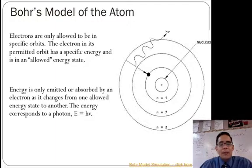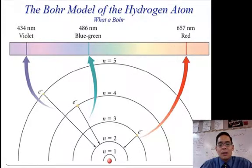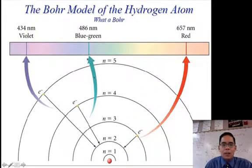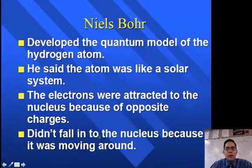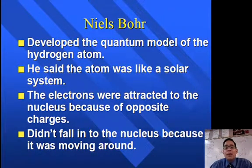So if you have questions, there's that picture. You can see all of these are the transitions. Turns out for hydrogen, the 3 to 2 creates that red line. The 4 to 2 creates the blue-green line. And the 5 to 2 creates the violet. There's a 6 to 2 as well that creates another violet. And so that's where all the four colors come from. So Niels Bohr has a summary: developed the quantum model of the hydrogen atom. He said the atoms are like a solar system. The electrons were attracted to the nucleus because of opposite charges. It didn't fall into the nucleus because it was moving around.